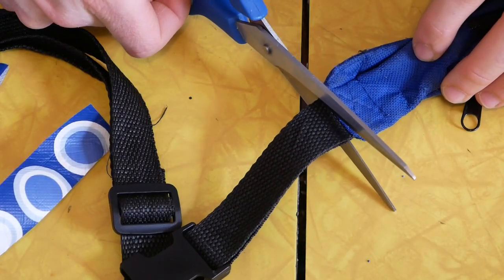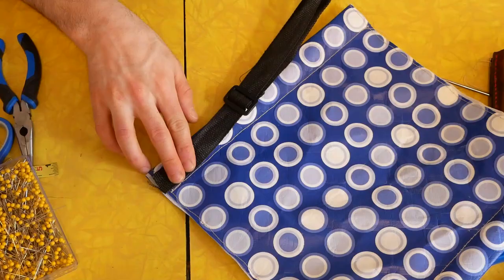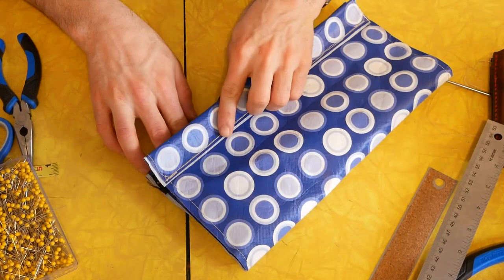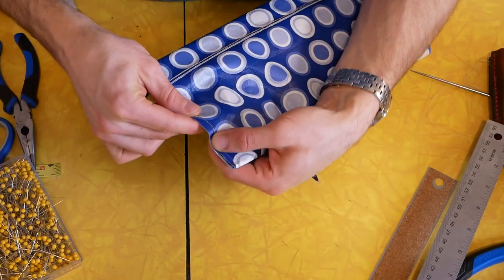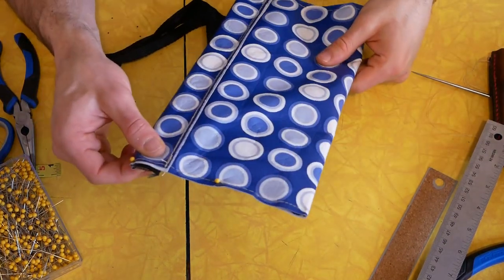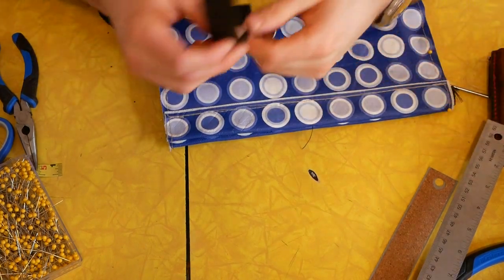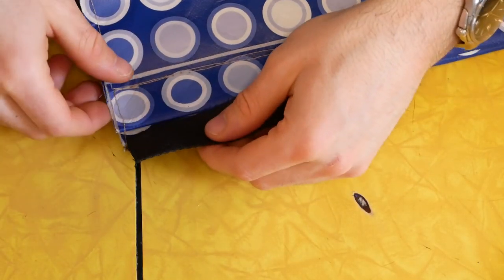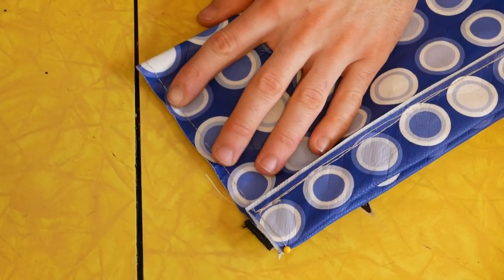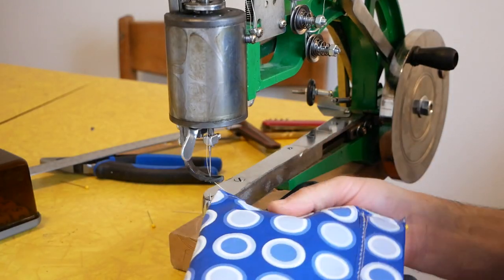The straps on the old fanny pack were still good, so I cut them off so I could reuse them. We're going to sew this pouch together inside out, and if you've never done this before it can be a little counterintuitive. The straps will extend outwards on the outside of the bag, so we need to pin them in place on the inside, which is really the outside facing inwards. Once you have your sides pinned together with the straps in place, you're ready to sew the seams.